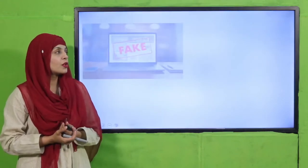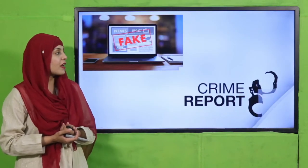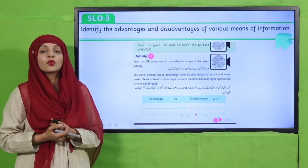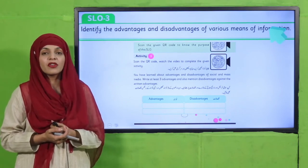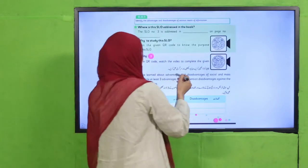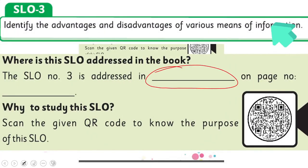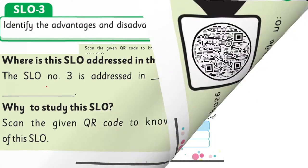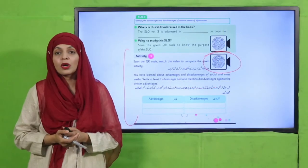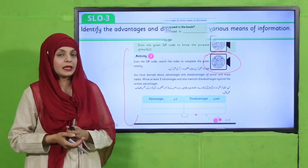My dear students, what you will do next is you will have to read these SLOs and fill in the blanks. Then, with this SLO, scan the second QR code that has been given to you. Watch the video very carefully, and then you will be able to complete the activities that have been given with this SLO.